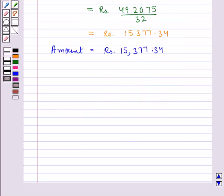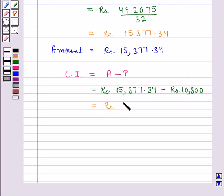Now we shall calculate the compound interest C.I. and this is equal to amount A minus principal P. Rs. 15,377.34 minus Rs. 10,800. And this is equal to Rs. 4,577.34 that is the compound interest C.I. is equal to Rs. 4,577.34.